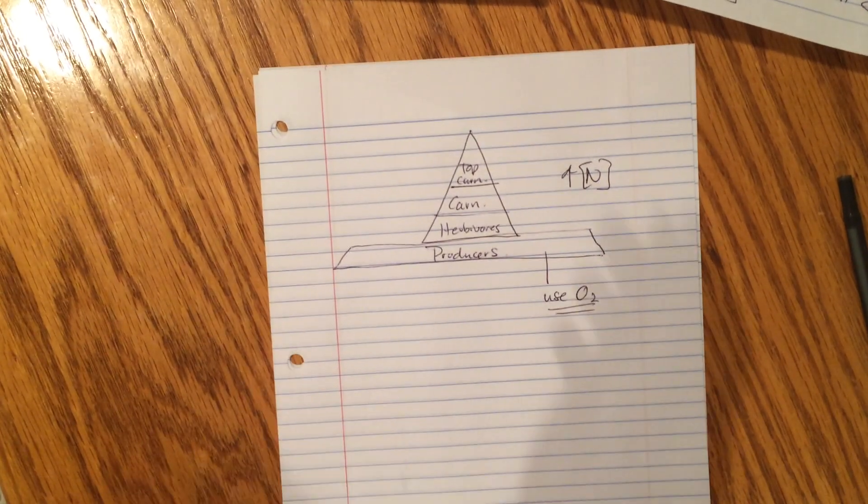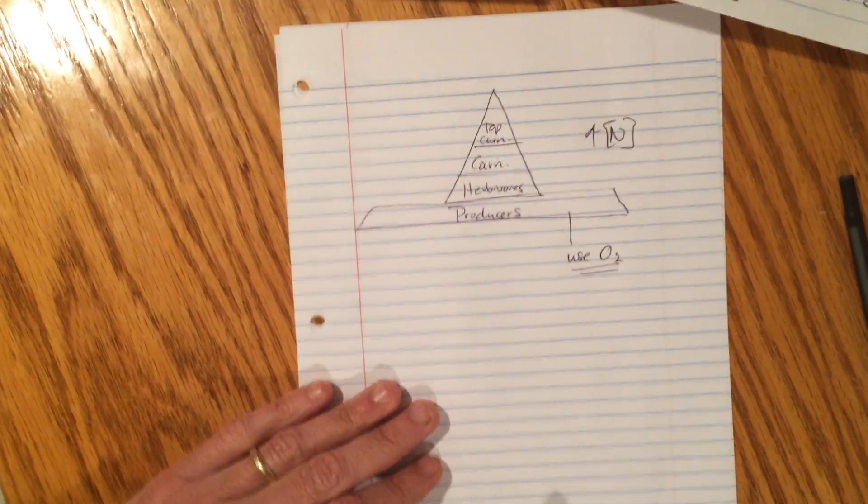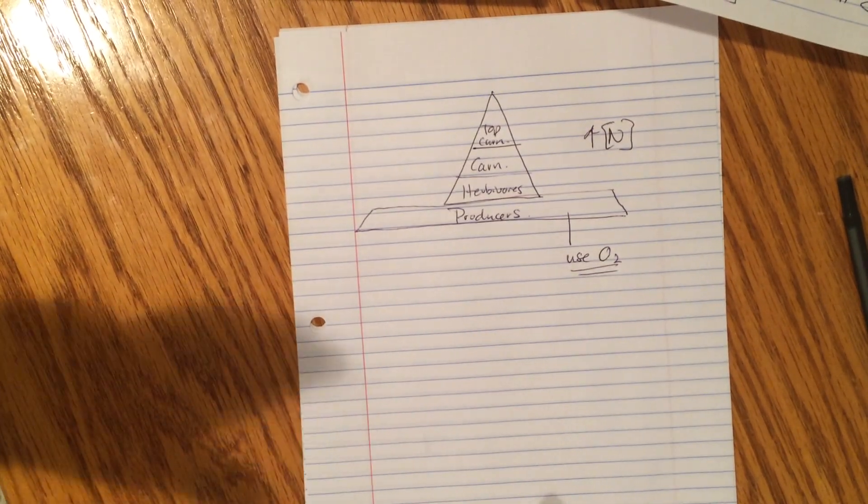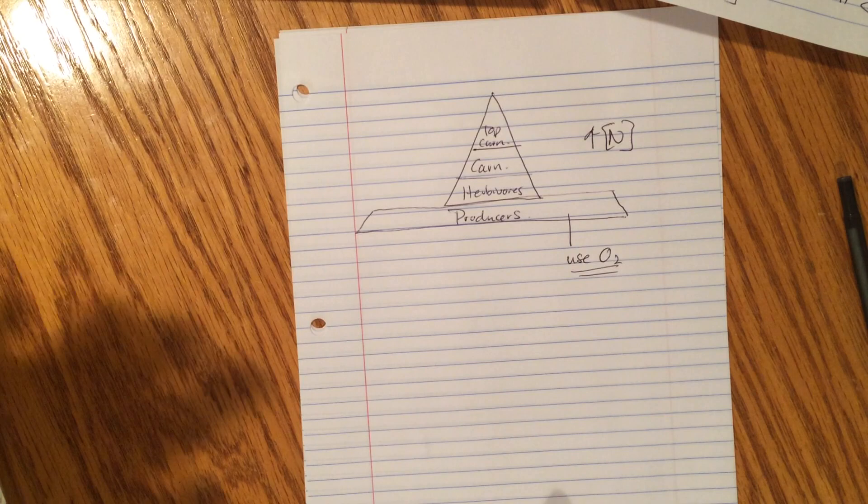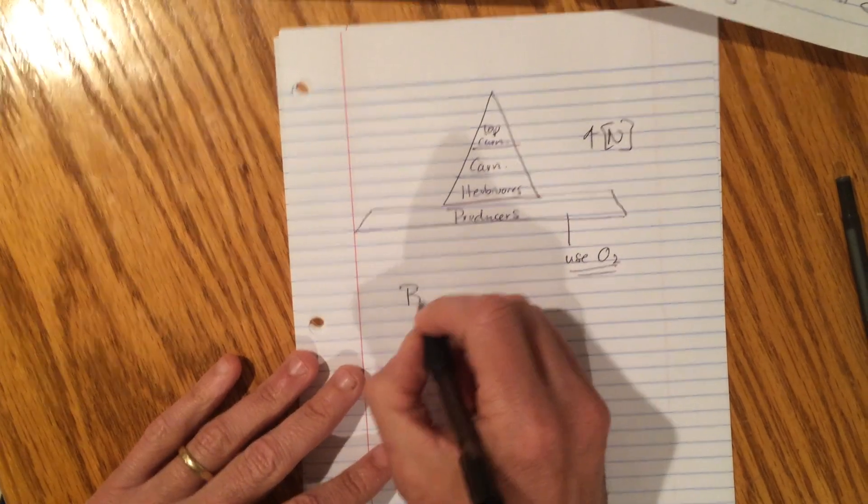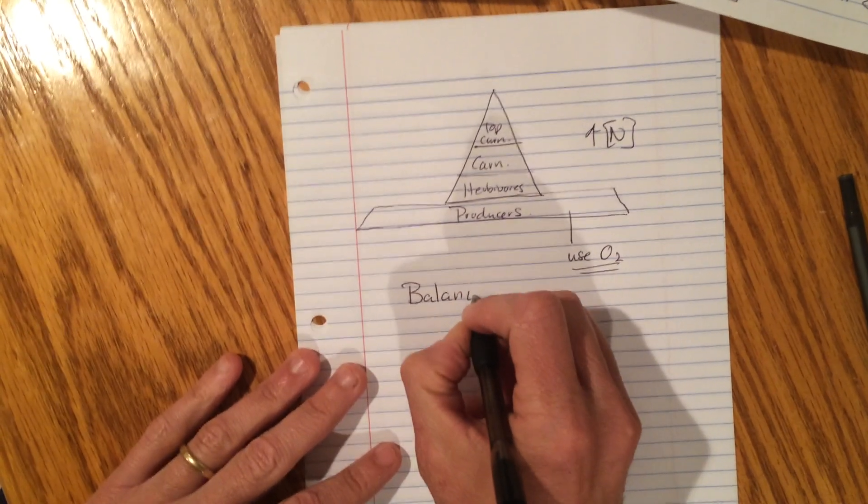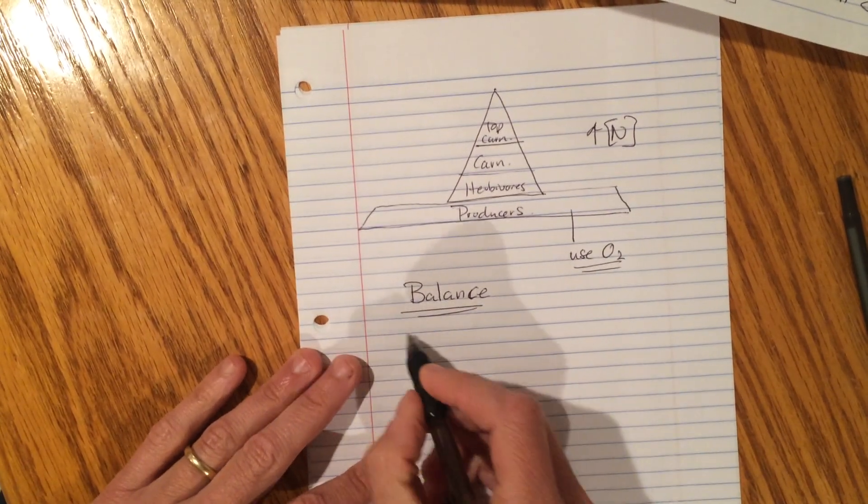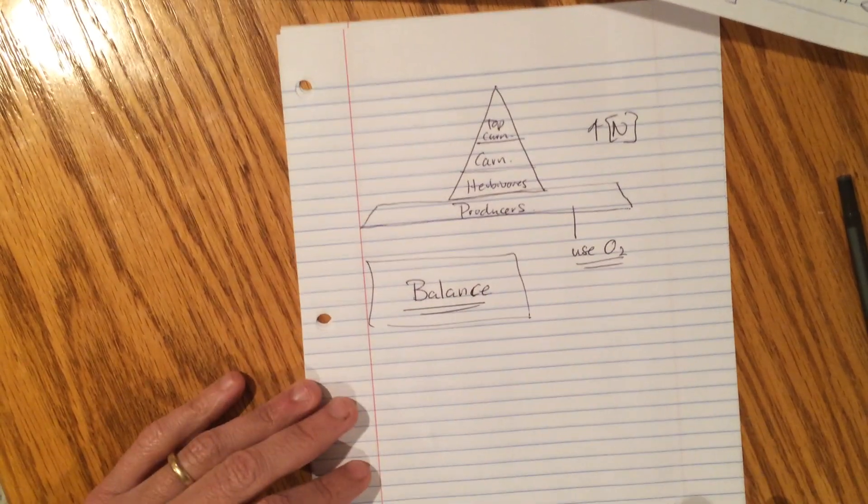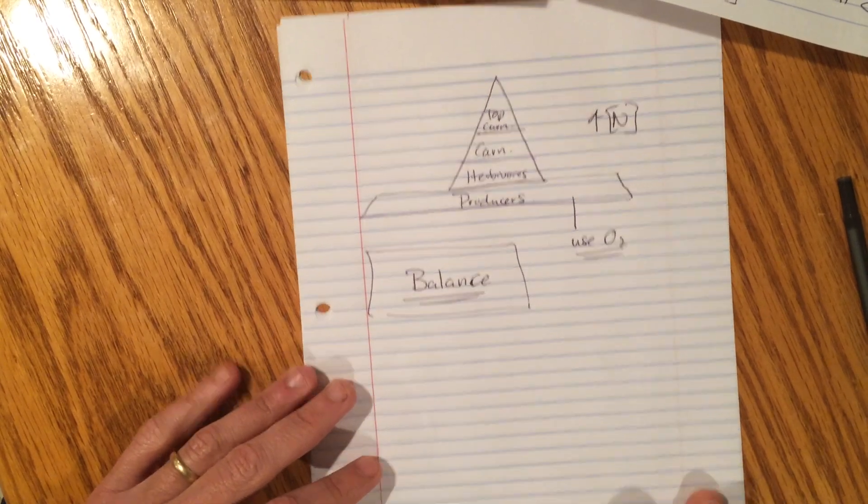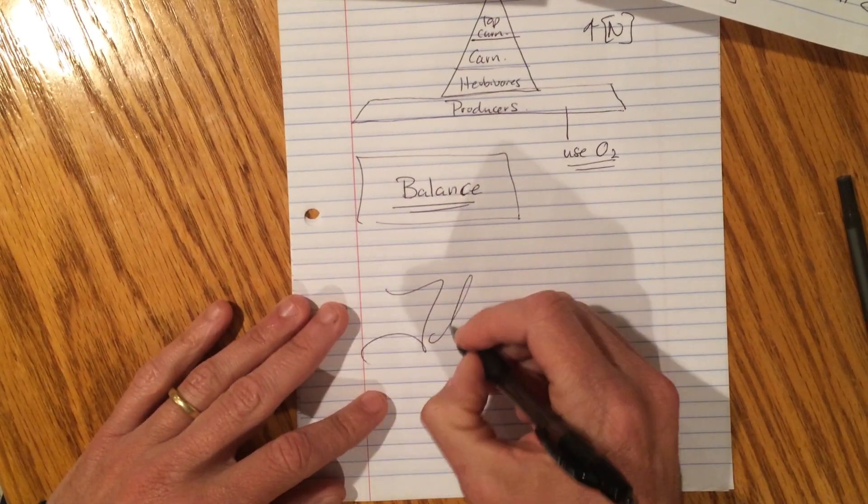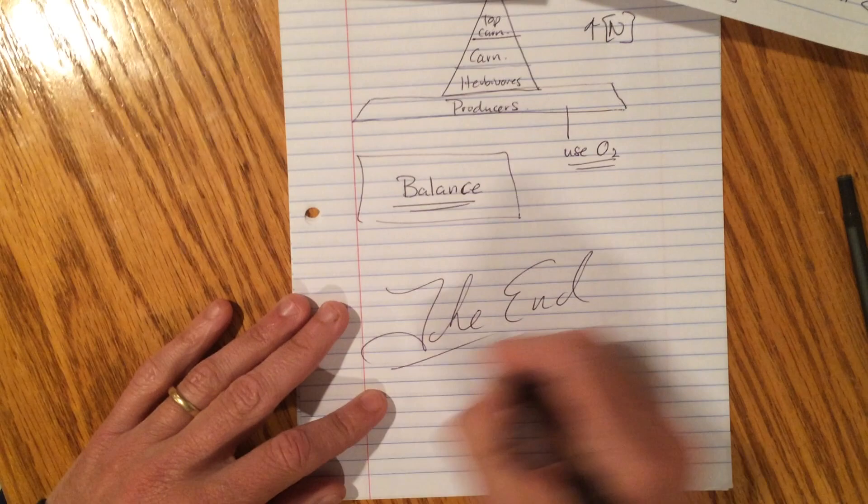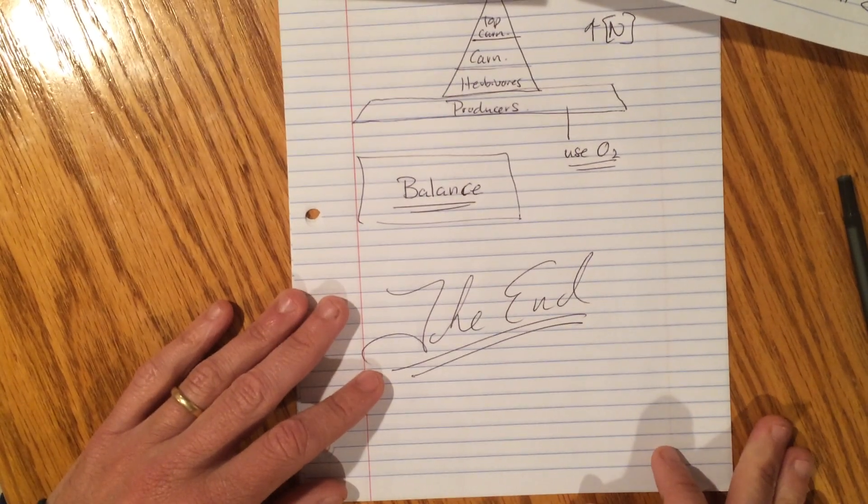Here's the key. If I have to wrap it up with one word, in an ecosystem, when you take a look at both the non-living components and the living, success is really determined by the maintenance of some type of balance. And that's the key. No doubt about it. And that brings us to the end of the ecology unit.